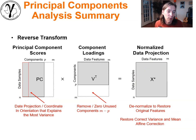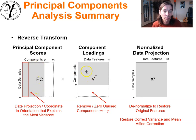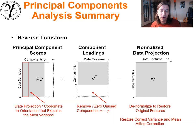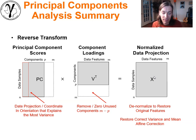The reverse transformation is easy because of orthogonality — we apply the transpose of the component loadings instead of computing the actual inverse. We take the principal component scores (n by p), multiply by the component loadings transpose (p by m), and we're back in our normalized standardized data space with all original n samples and m features.